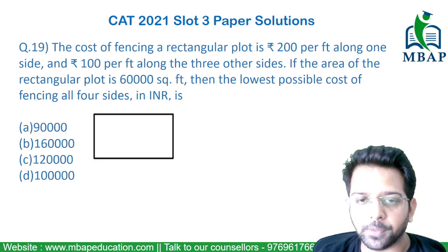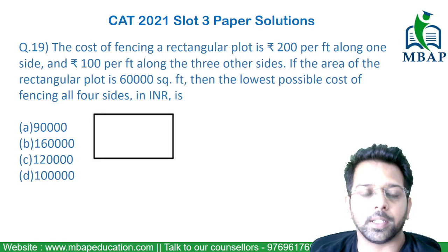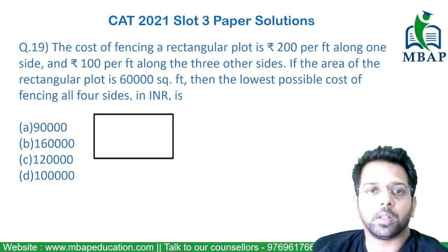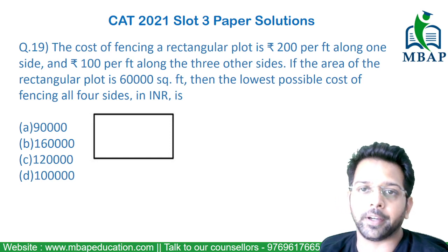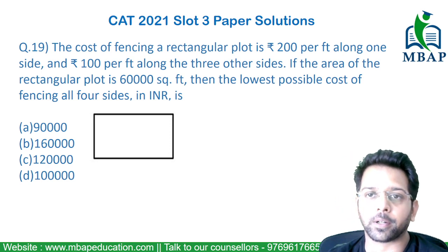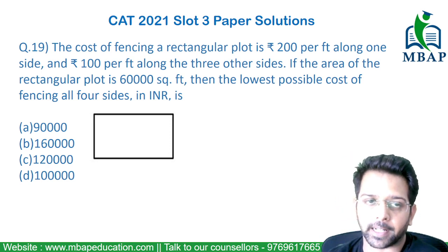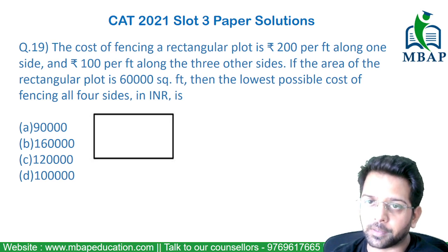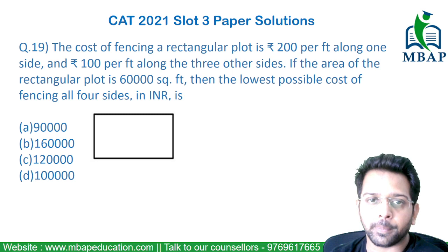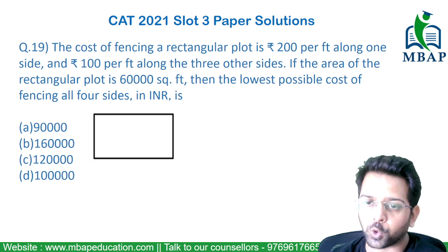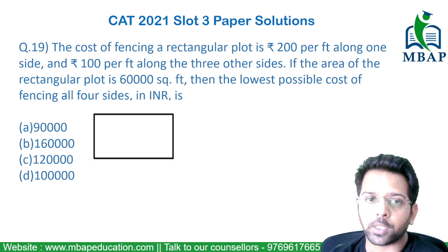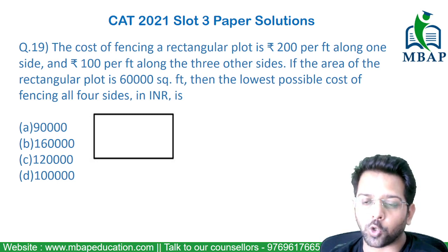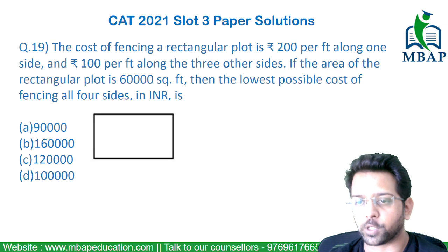Let's have a look at the next question. The question says: the cost of fencing a rectangular plot is 200 rupees along one side of the rectangle and 100 rupees per feet along the other three sides. If the area of the rectangular plot is 60,000 square feet, find the lowest possible cost of fencing all four sides.